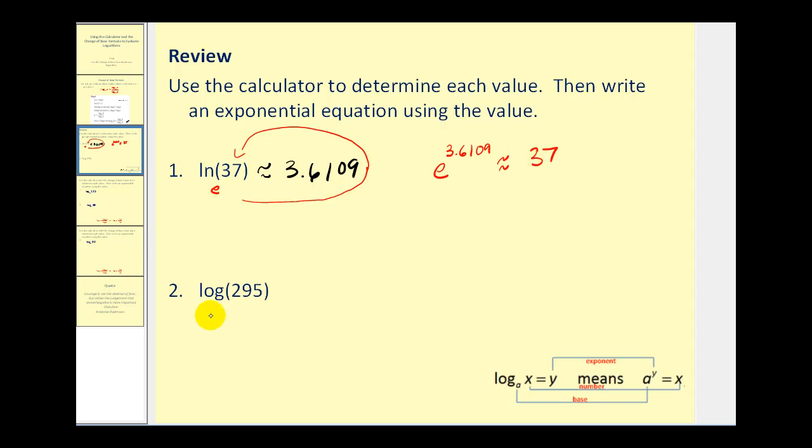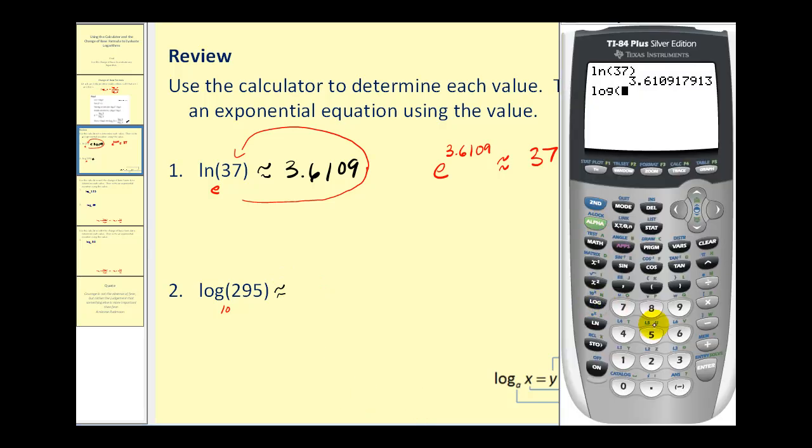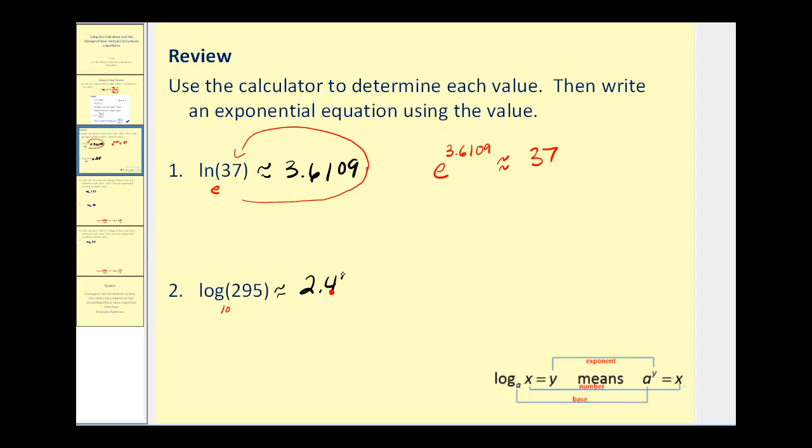Number two can also be done on the calculator without the change of base formula because this is common log or log base 10. So let's go ahead and determine this approximate value on the calculator. Log 295 is approximately 2.4698. So again, what that means is 10 to the power of 2.4698 is approximately equal to 295.